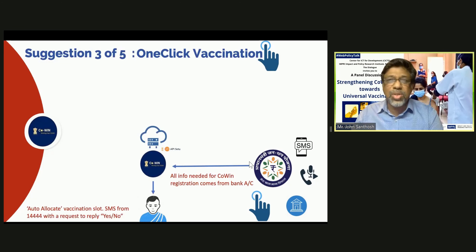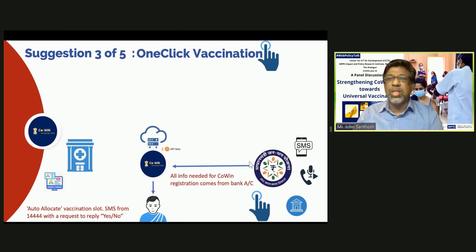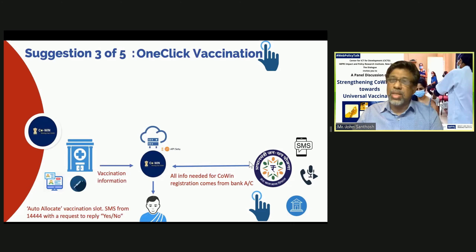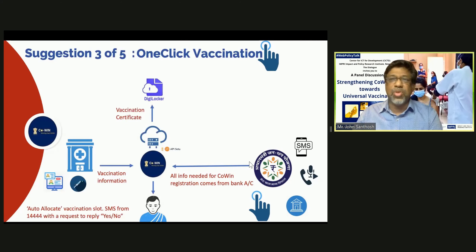It's a motivation to grab the slot. If that happens, the person goes to the government vaccination center, produces the ID proof that was used when opening the bank account, that gets verified, and the vaccine is administered. This information goes into DigiLocker — that system is already in place, and CoWIN is interfaced with DigiLocker.